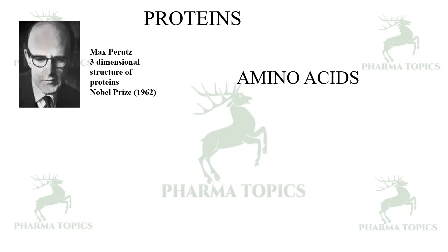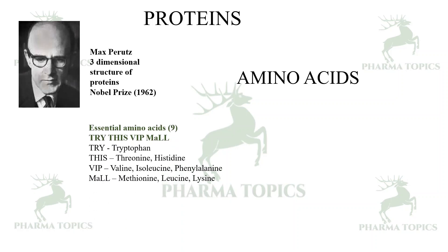Proteins are nothing but a connection of amino acids. There are around 20 amino acids; the essential amino acids are nine. You can use this code to remember them: 'Try This VIP Mall' — where 'Try' is tryptophan, 'T-his' is threonine and histidine.